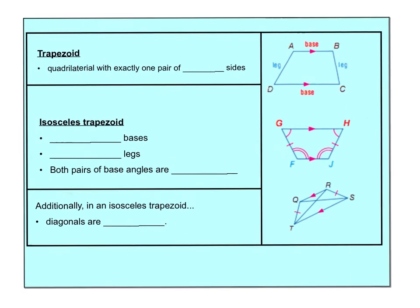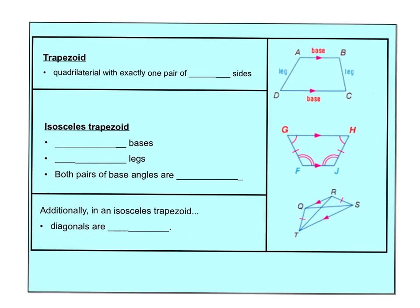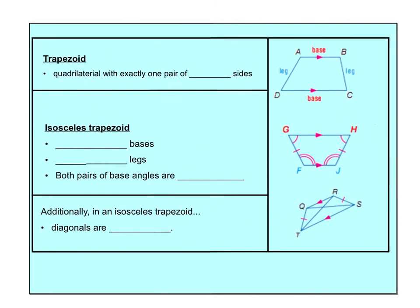A trapezoid has only one pair of parallel sides — just one. These are often called the bases — those are your parallel sides. And then your non-parallel sides are called legs. So these two are bases, these two are legs.